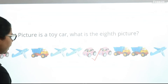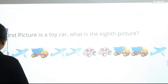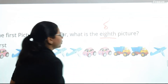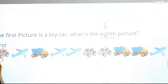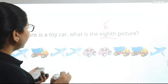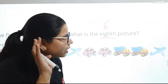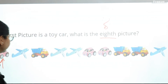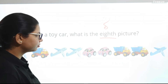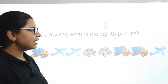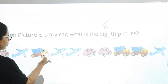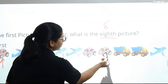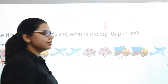Next question: the first picture is a toy car. What is the eighth picture? First, second, third, fourth, fifth, sixth, seventh, eighth — this is the eighth picture. Very good! Did you answer the same? Clap for the kids!